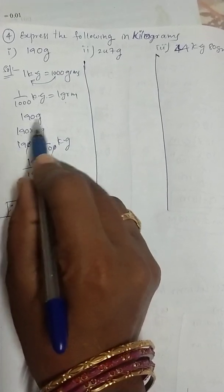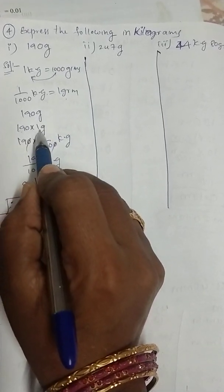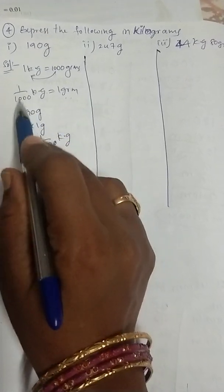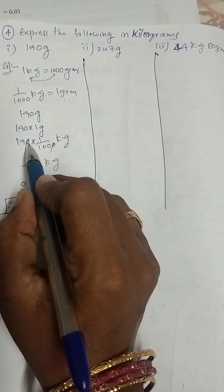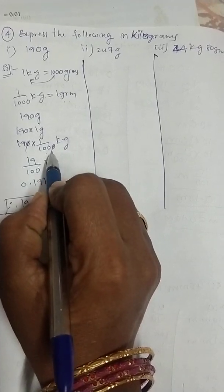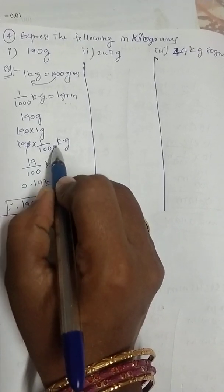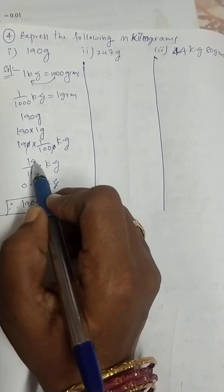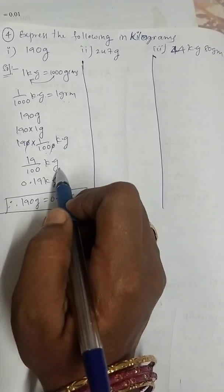So first given that 190 grams, we can write as 190 into 1 gram. 190 into 1 gram value already we know, 1 by 1000 kilograms. After that, this is the numerator value, this is the denominator value. 1, 0, 1, 0, we can do the cancellation. Now remaining 19 by 100 kilograms.